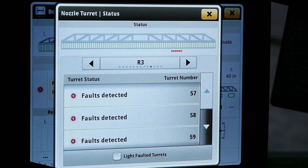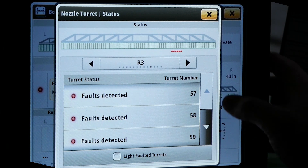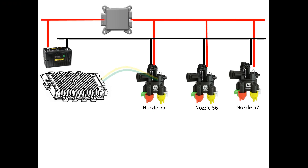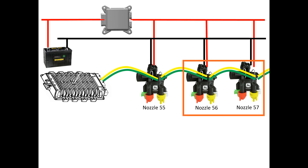This example shows nozzle 57 being the first to report the fault. We will need to focus our diagnostic efforts on this nozzle — 57 — the next nozzle inboard, 56, and the harnessing in between 56 and 57.